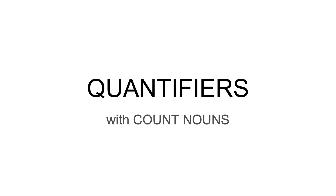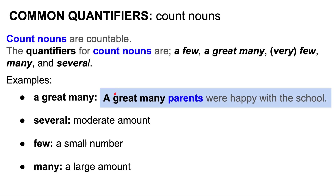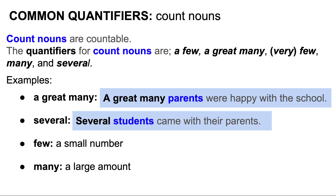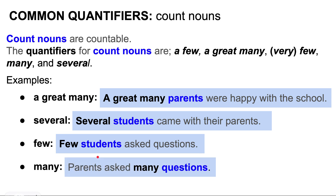Now let's look at quantifiers with count nouns. Count nouns are countable — we can count them. The quantifiers for count nouns are a few, a great many, very few, many, and several. A great many is used for a large amount — for example, 'a great many parents were happy with the school.' Several is used for a moderate amount — 'several students came with their parents.' Few is used for a small amount — 'few students asked questions.' And many is used for a large amount — 'parents asked many questions.'